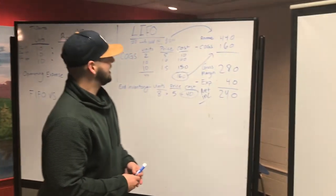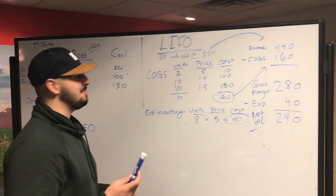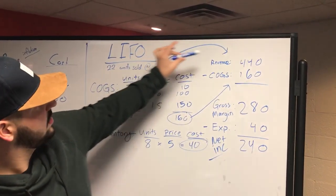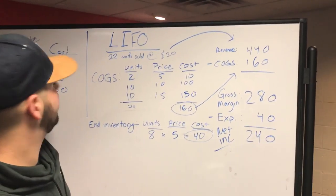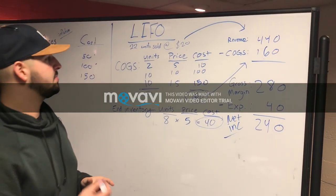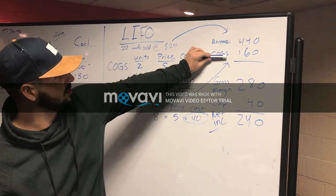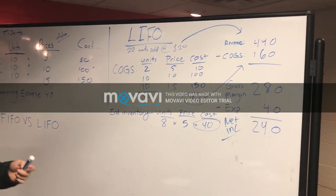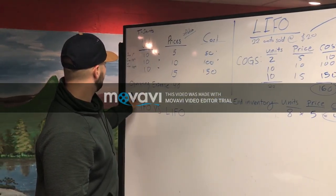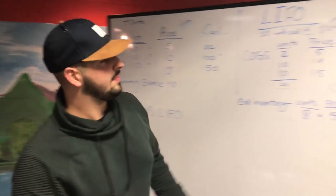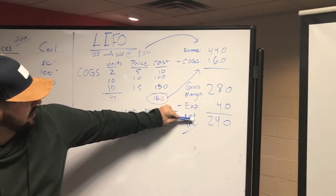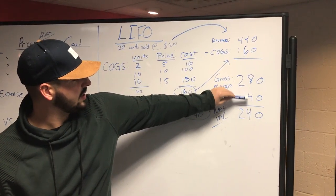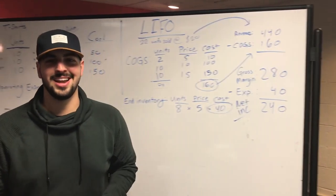Thank you, Lydia. As I explained with FIFO, we have the same problem where we sold four hundred and forty dollars worth of our T-shirts. But in this problem, since it was LIFO, our cost of goods sold was different, leaving us with a different gross margin. In LIFO versus FIFO, we keep the expenses the same, which gives us a net income of two hundred and forty dollars — because we subtract forty from two eighty to get two forty.